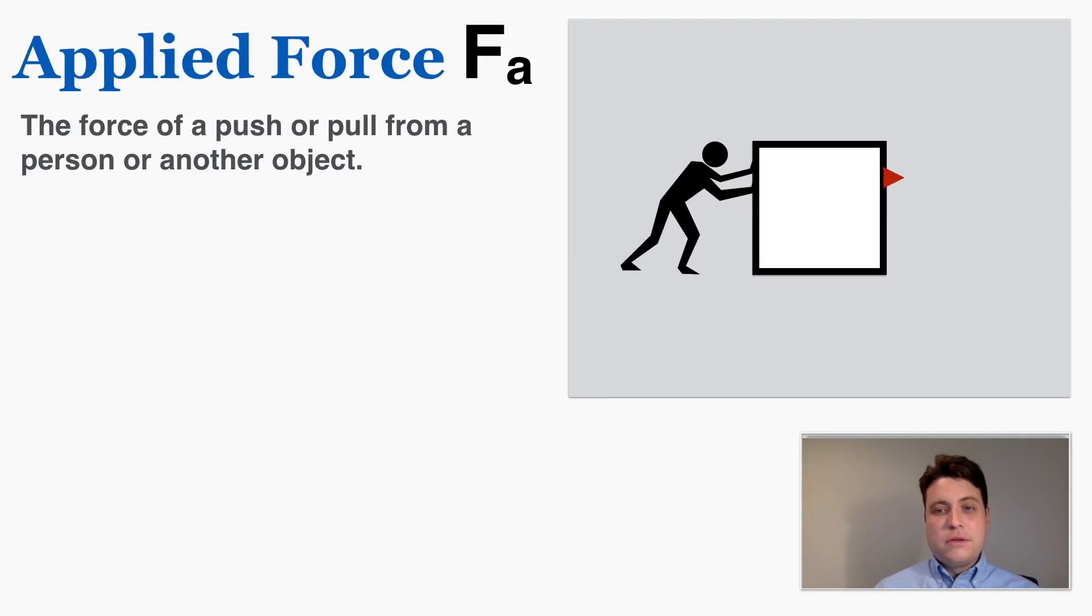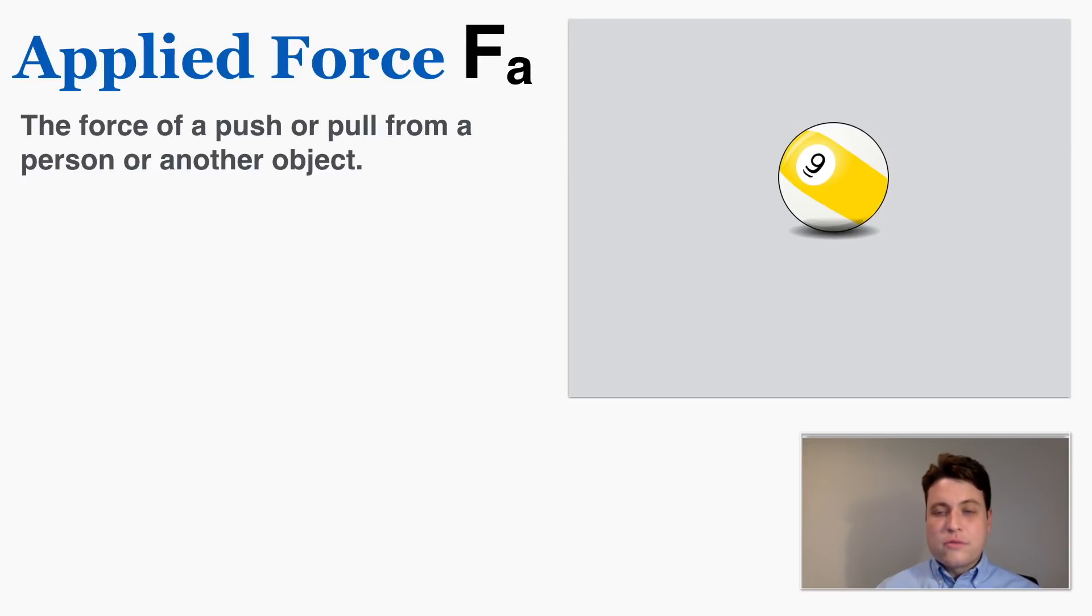Next we have the applied force. This is the simplest type of force, it's just the force of a push or pull from a person or another object. So if you put a force on this box we would consider that to be the applied force or F lowercase a, and if this billiard ball hits another billiard ball it applies a force on it so we would call that the applied force as well.